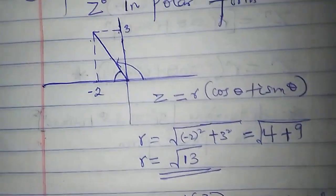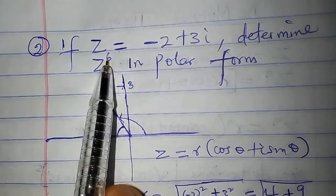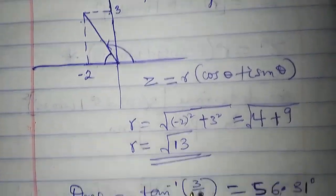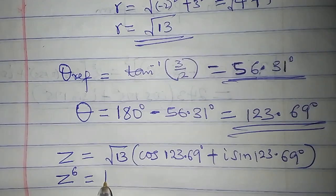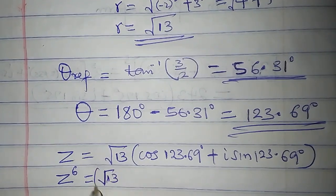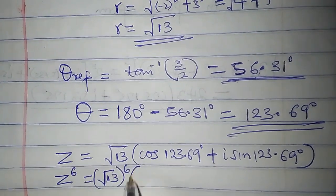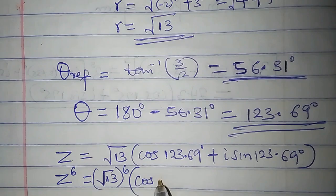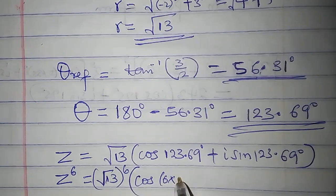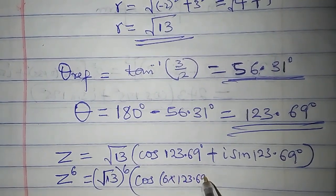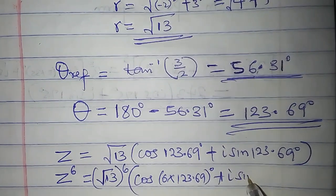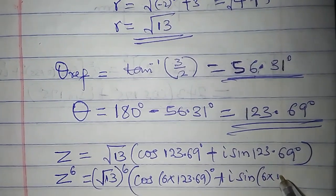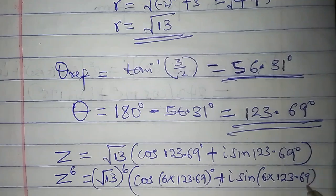Remember, we are looking for z to the power of 6 in polar form. Z to the power of 6 by De Moivre's theorem is root 13 to the power of 6 times cos 6 times 123.69 degrees plus i sine 6 times 123.69 degrees.